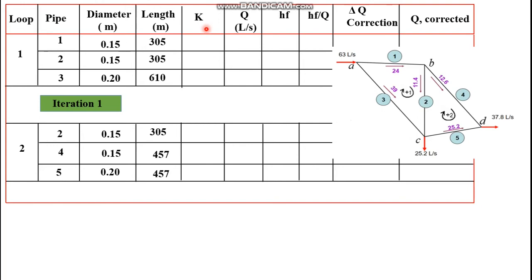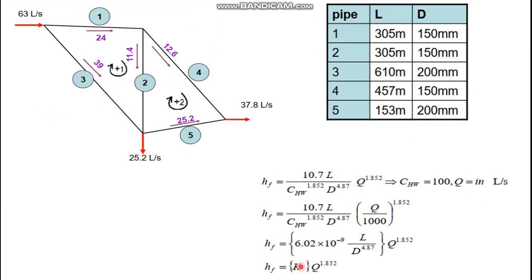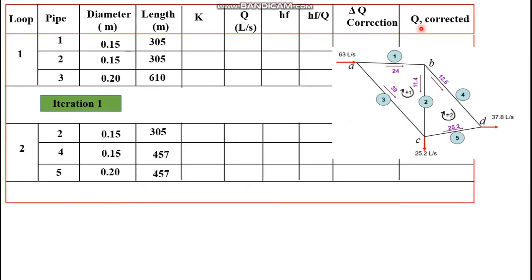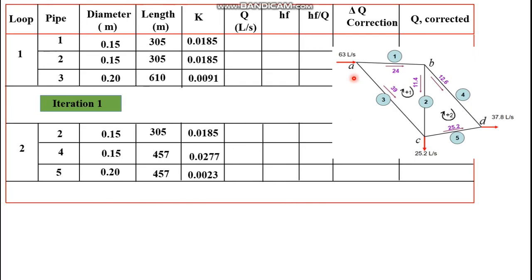The first step is to calculate the K value by substituting the length and diameter for each pipe. Once K is calculated, the next step is to assume the discharge. We have four nodes or junctions: A, B, C, and D. Flow is supplied to junction A, so we assume the discharge in pipe 1 to be 24 and pipe 3 to be 39. The flow entering junction A is 63 liters per second, and the flow leaving is 24 plus 39, which equals 63 — so it is balanced.